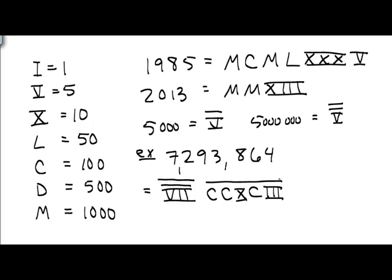and then 864 would be, there's a 500, 600, 700, 800, and 60 is LX, and 4 is IV.